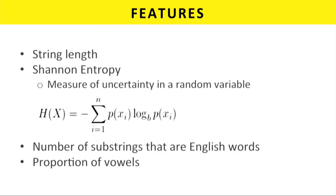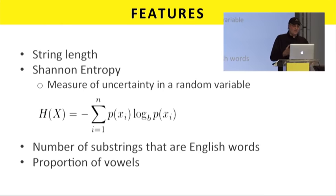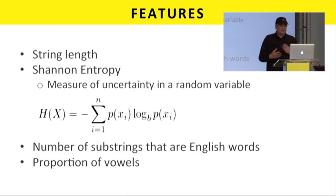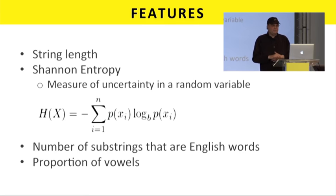The four features we're building are: string length — the longer the string, the more likely it's a generated malicious domain; entropy — the more random it is, the more likely it's generated and malicious; the number of substrings that are English words — more substrings actually mean less likely to be malicious; and the proportion of vowels — real words have vowels, while generated domains often don't have as many.